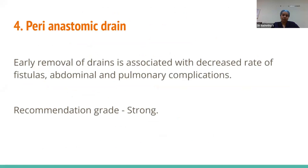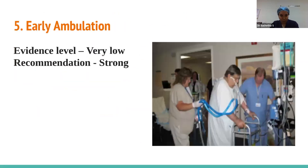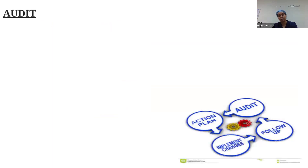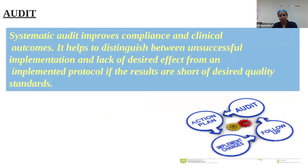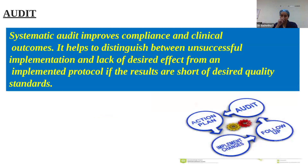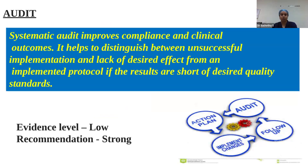Peri-anastomotic drain: early removal is associated with decreased risk of fistula, abdominal and pulmonary complications — strong recommendation. Early ambulation also carries a strong recommendation. Most importantly, audit — a systematic audit improves compliance and clinical outcomes, and carries a strong recommendation.